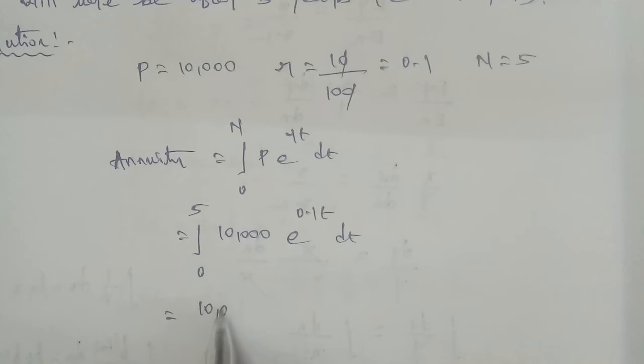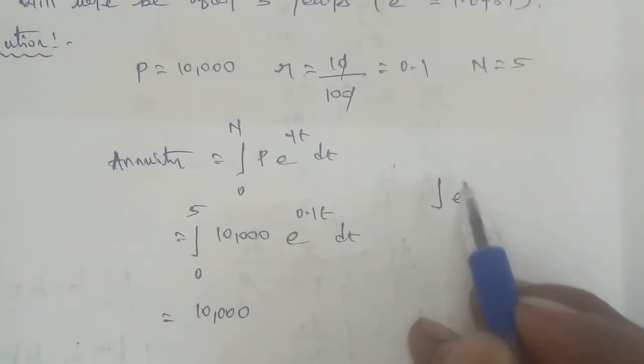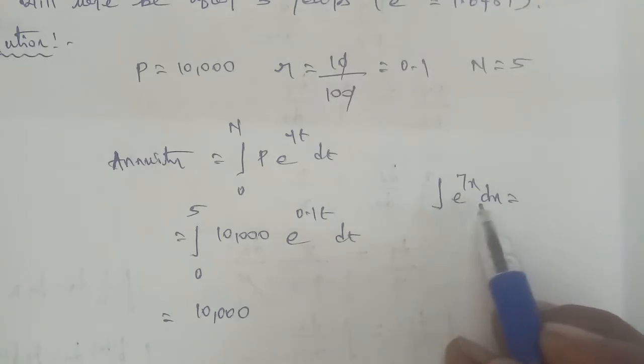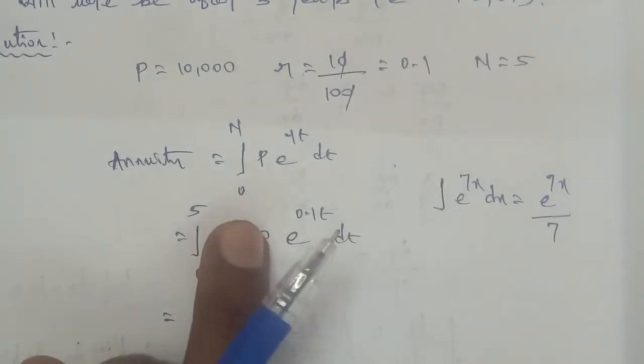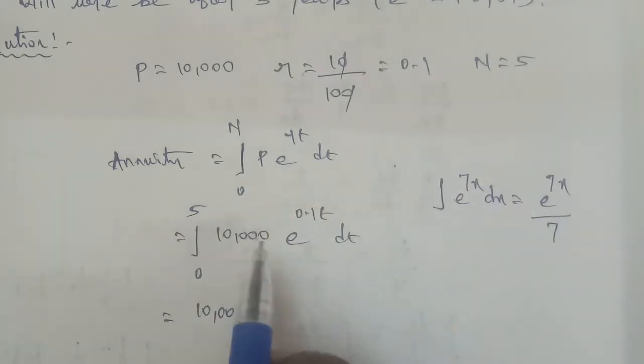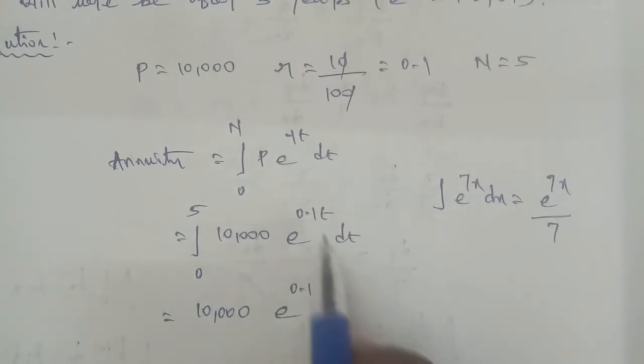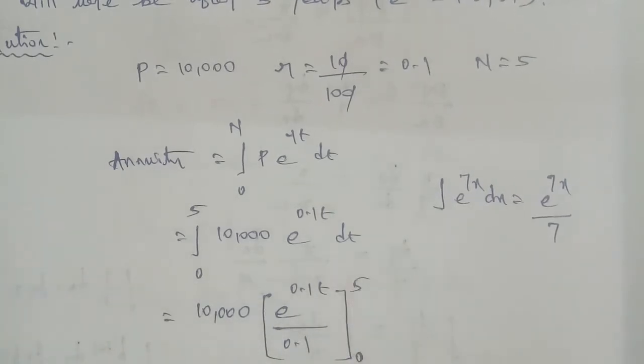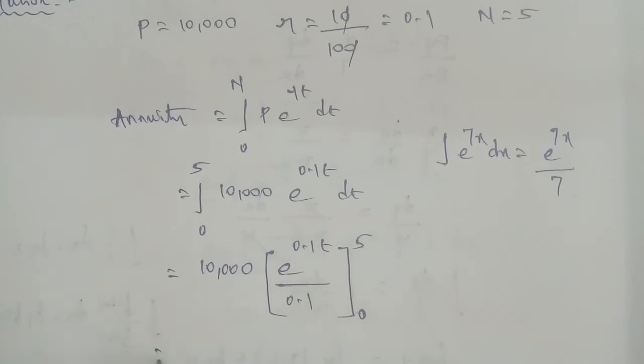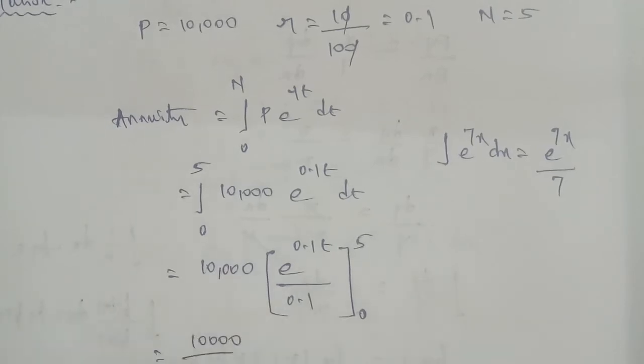So that equals 10,000 as constant, integral of e^(0.1t) dt. This equals 10,000, e^(0.1t) divided by 0.1. So you can apply the limit, the limit is 0 to 5. So 0.1 is removed, so 10,000 divided by 0.1.